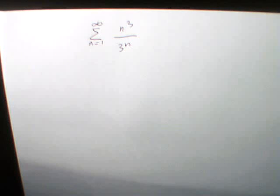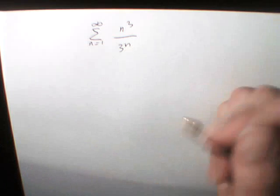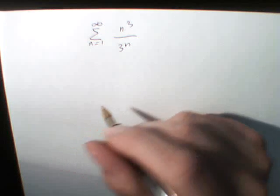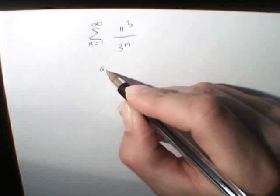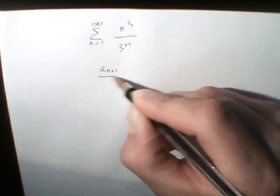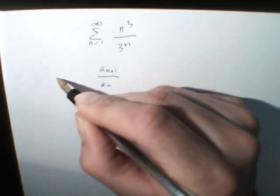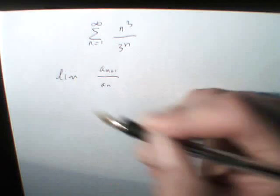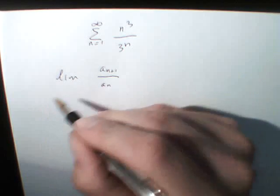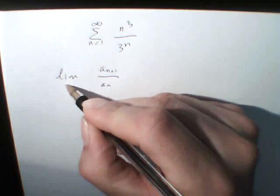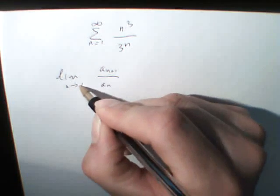This is an interesting series. Is it convergent or not? Let's find out. Let's do the ratio test, which as you know is aₙ₊₁ divided by aₙ. We try to find the limit of aₙ₊₁ divided by aₙ for n tending towards infinity.